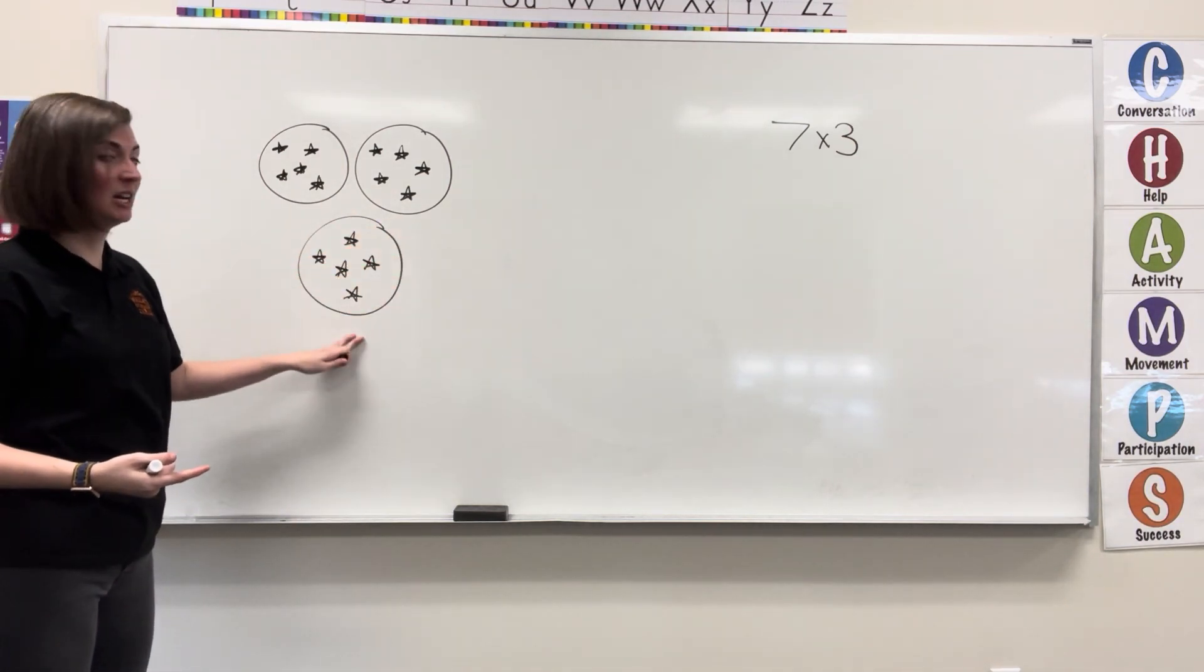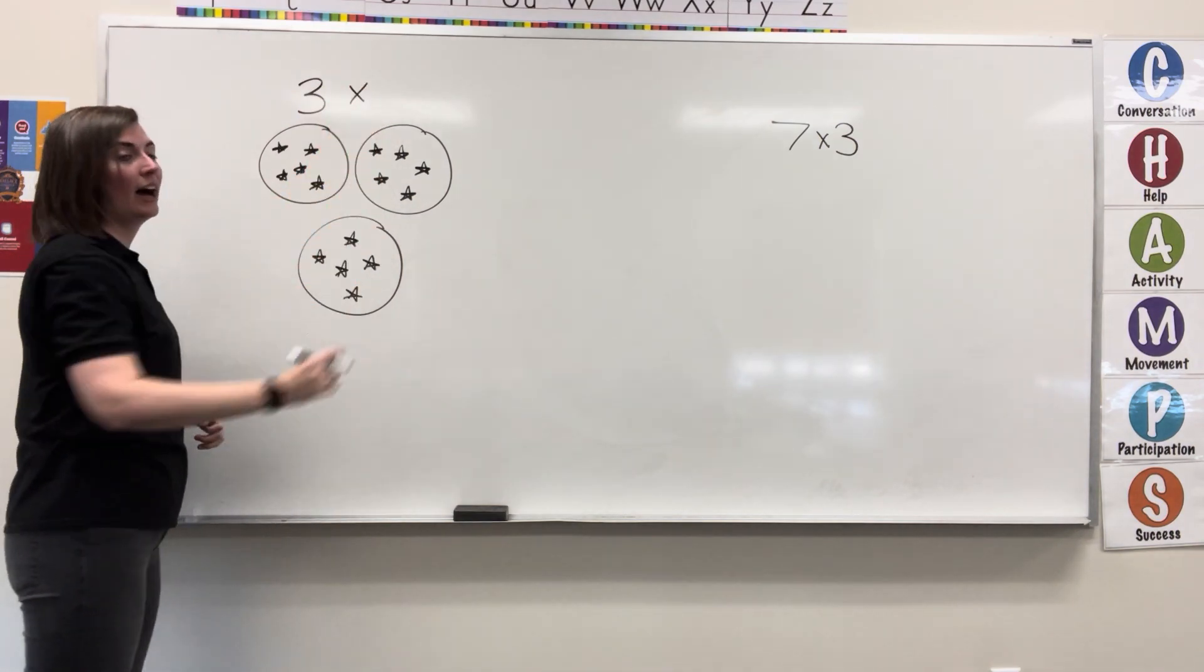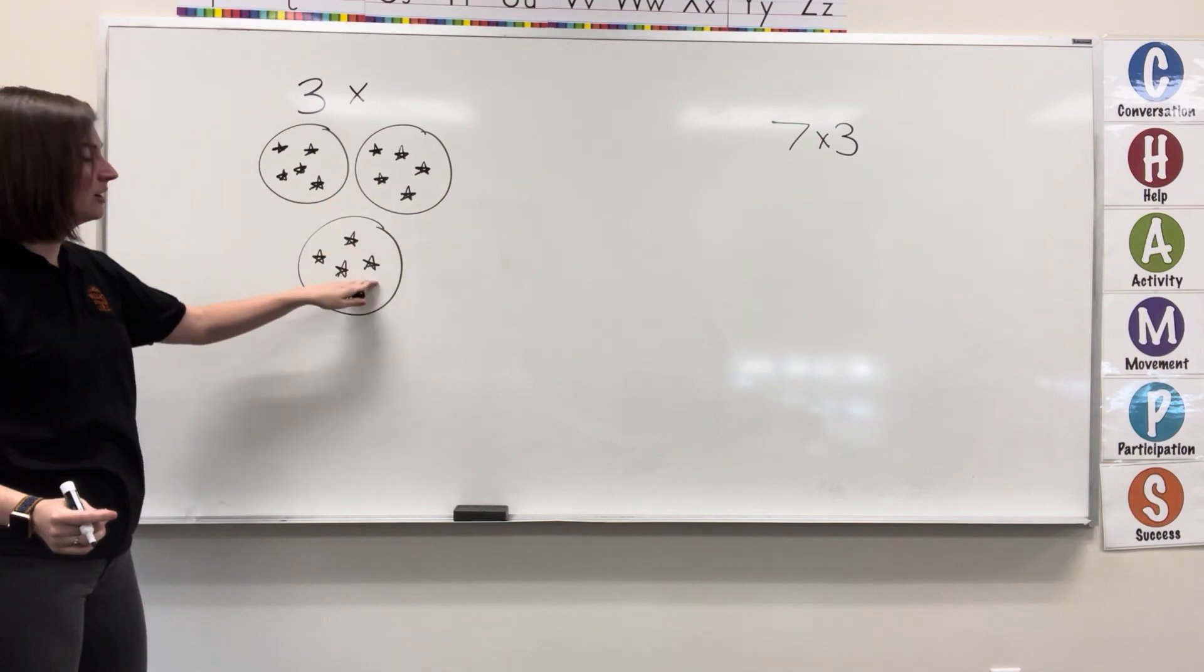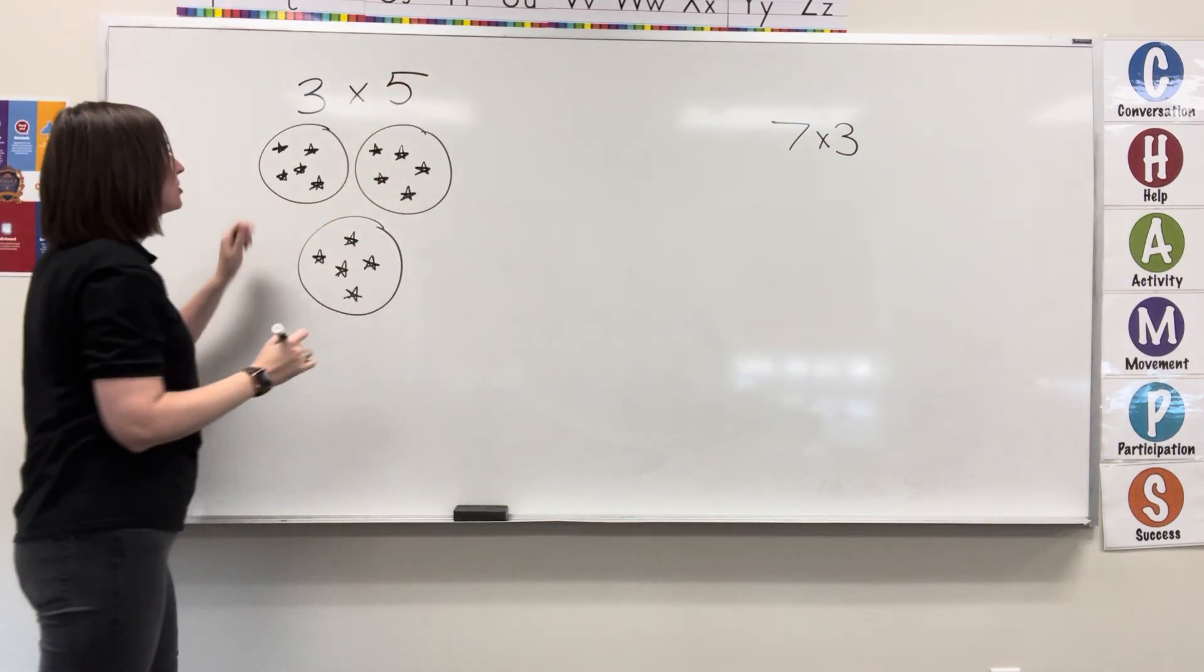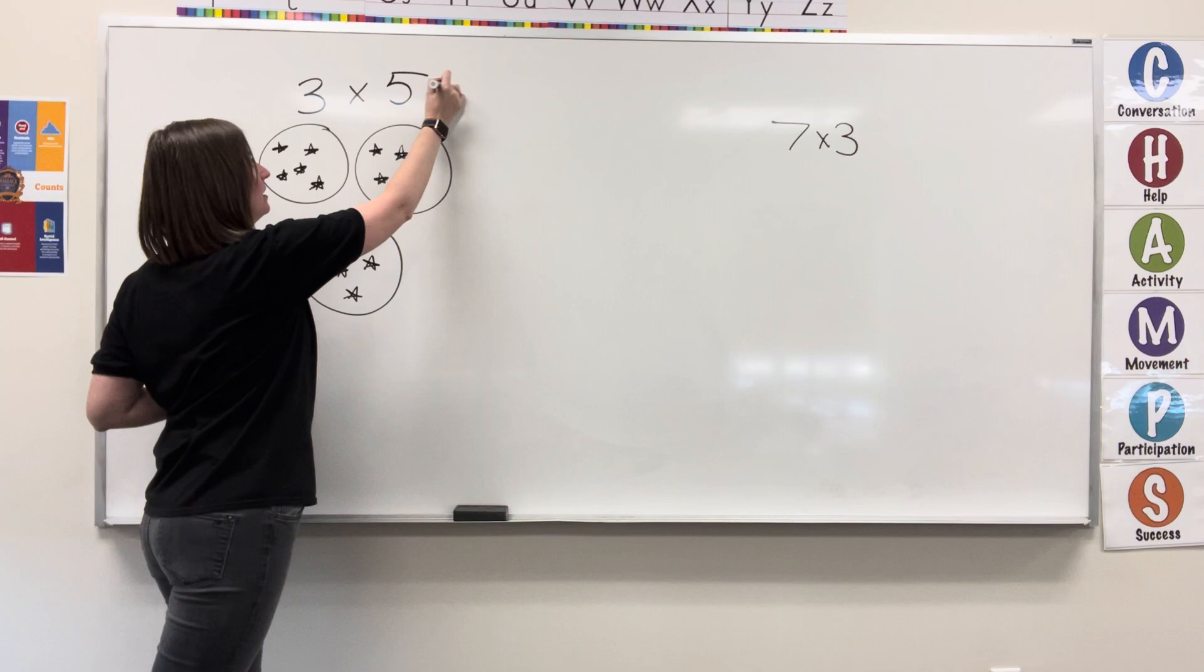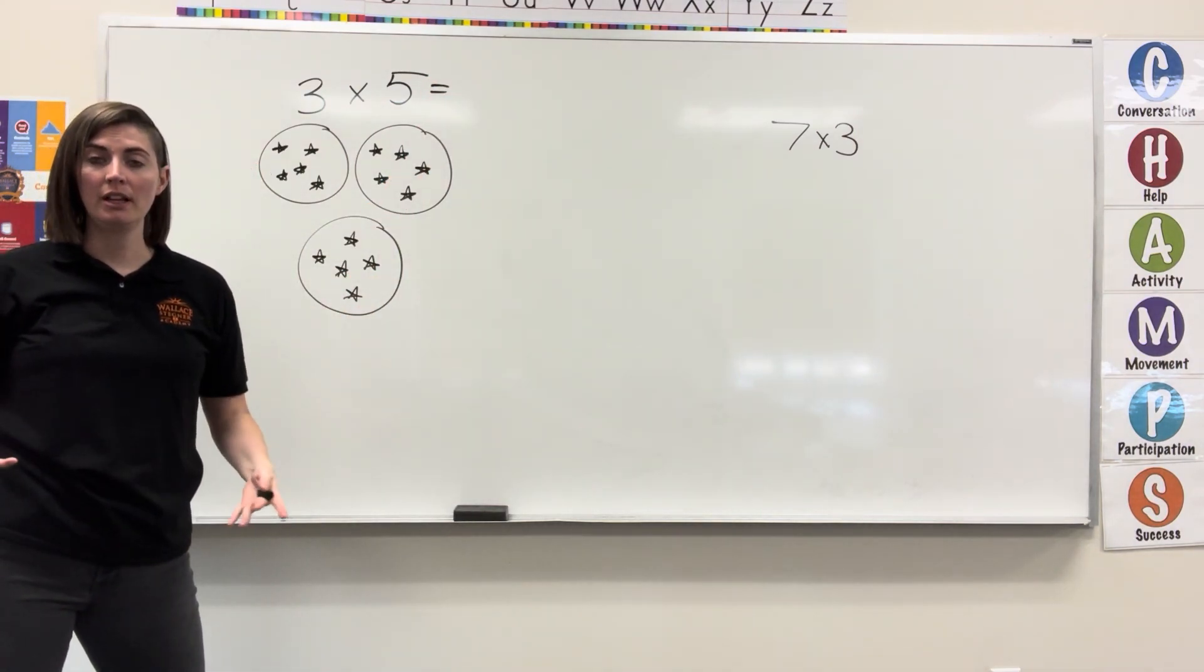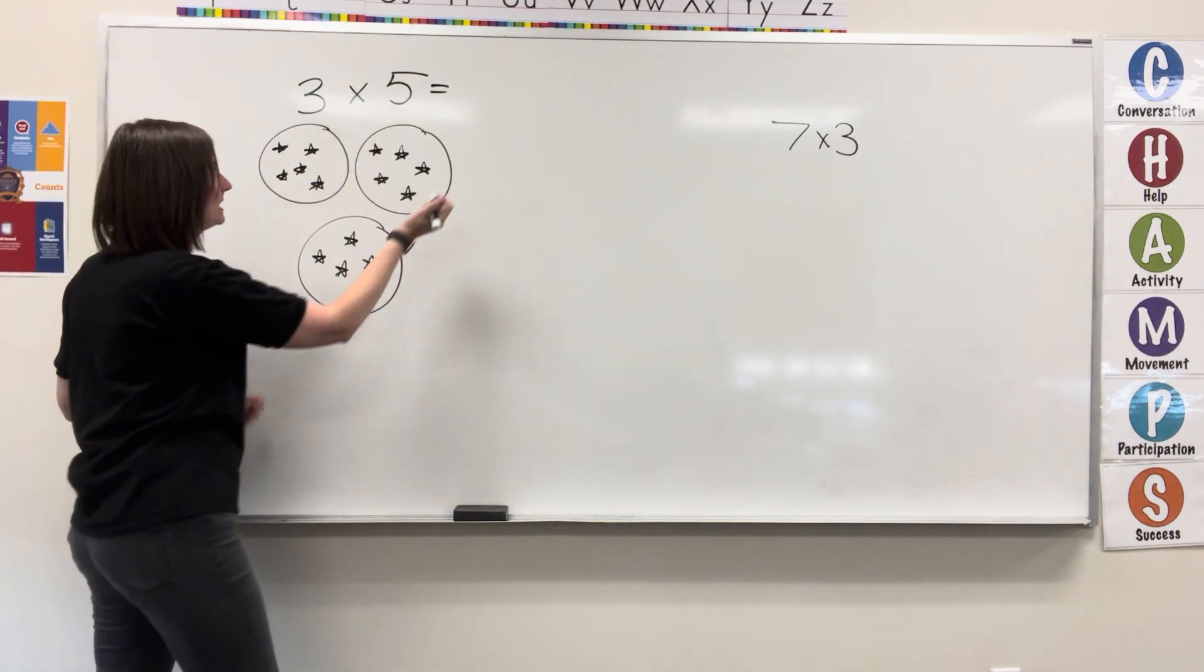Three groups is going to be my first factor, and I have that five times. There's five in each of the three groups. So, three groups, five in each group, and then we can count how many total are in each group. I have five, ten, fifteen.